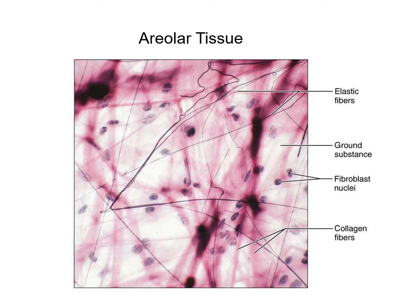Some tissues have lots of extracellular matrix, such as areolar tissue where cells are very sparse and spread apart. Other tissues like epithelial tissue have very little extracellular matrix because the cells are packed tightly together.